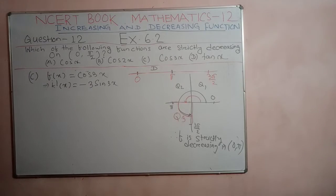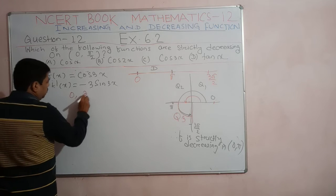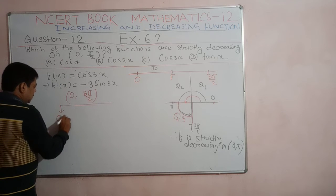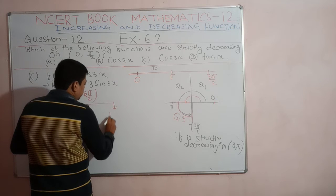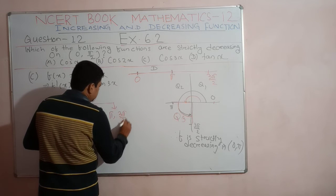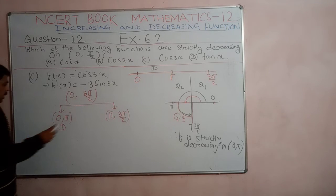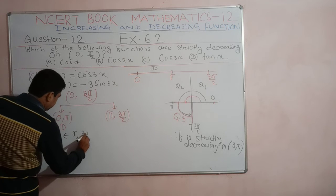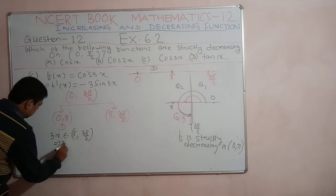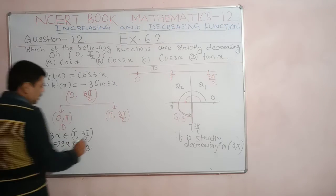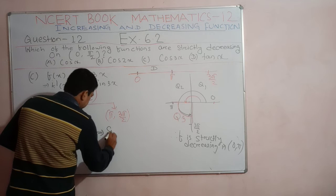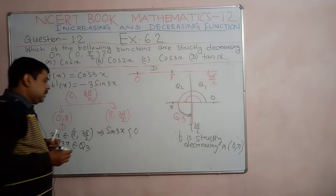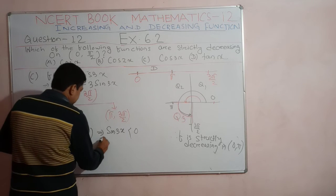In the second interval π to 3π/2, the angle 3x lies in the third quadrant. In the third quadrant, sin 3x is less than 0 — it is negative.